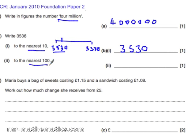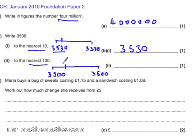To the nearest hundred, 3538 is between 3500 and 3600. The 38 is closer to the 500 side, so 3538 rounded to the nearest 100 becomes 3500.